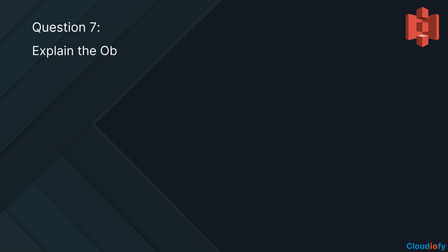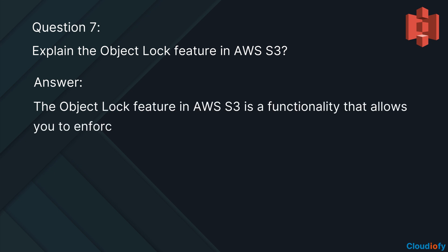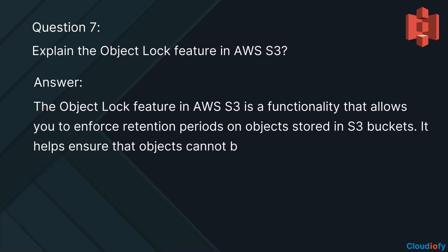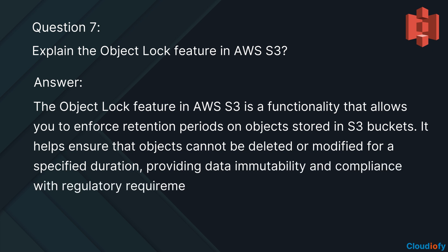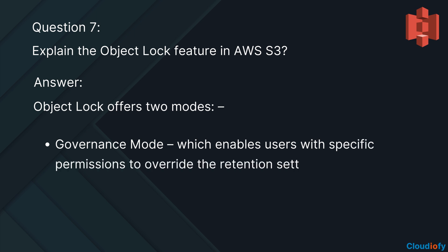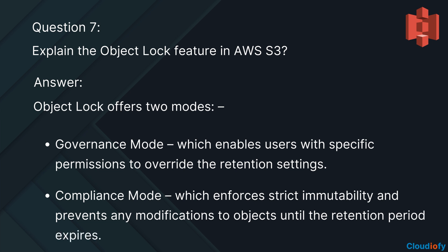The next question is: explain the object lock feature in AWS S3. The object lock feature in AWS S3 is a functionality that allows you to enforce retention periods on objects stored in S3 buckets. It helps ensure that objects cannot be deleted or modified for a specified duration, providing data immutability and compliance with regulatory requirements. Object lock offers two modes: Governance mode, which enables users with specific permissions to override the retention settings; and Compliance mode, which enforces strict immutability and prevents any modifications to objects until the retention period expires.